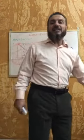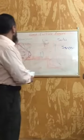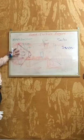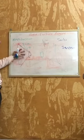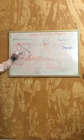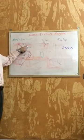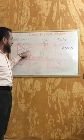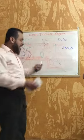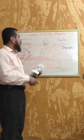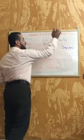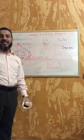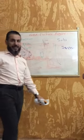For now, just know that any fluid flowing through a convergent duct in subsonic speed will see its pressure decrease while its velocity increases. And any fluid flowing through a divergent duct in subsonic speed will see its velocity decrease while its pressure increases.